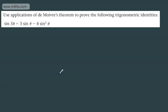We can use De Moivre's theorem to prove trig identities. The task is to use an application of De Moivre's theorem to prove the following: sin(3θ) is equal to 3 sin(θ) minus 4 sin³(θ). We looked at this when we did our core maths.